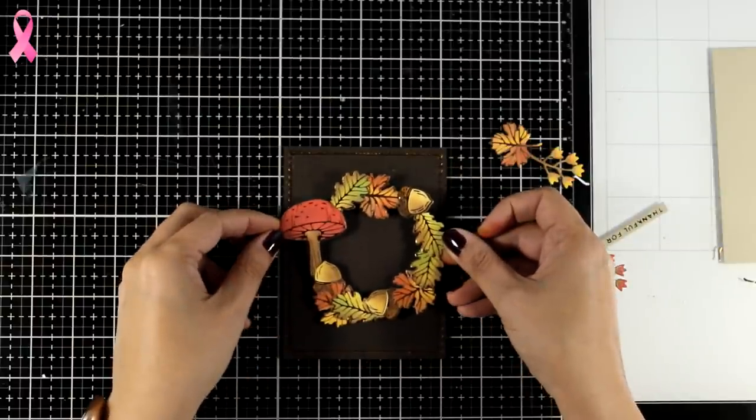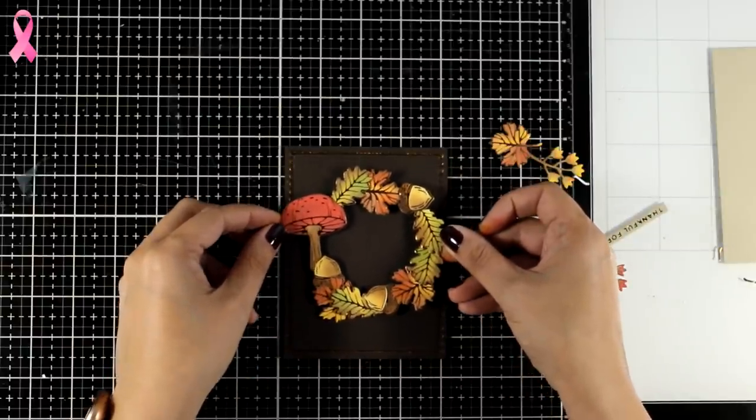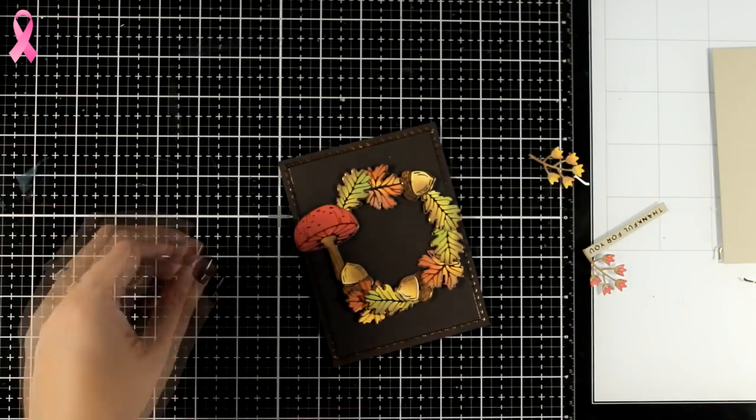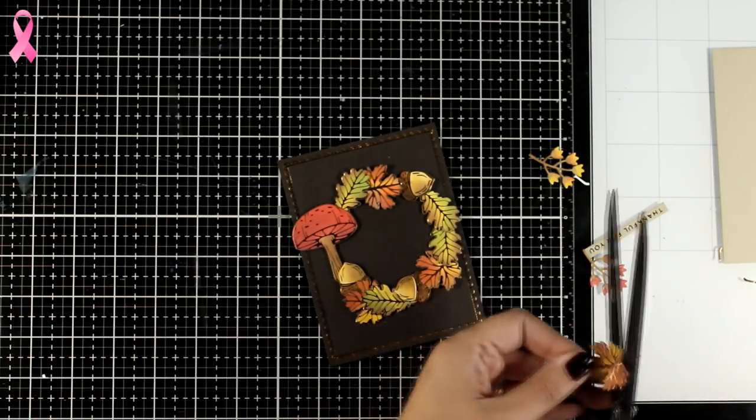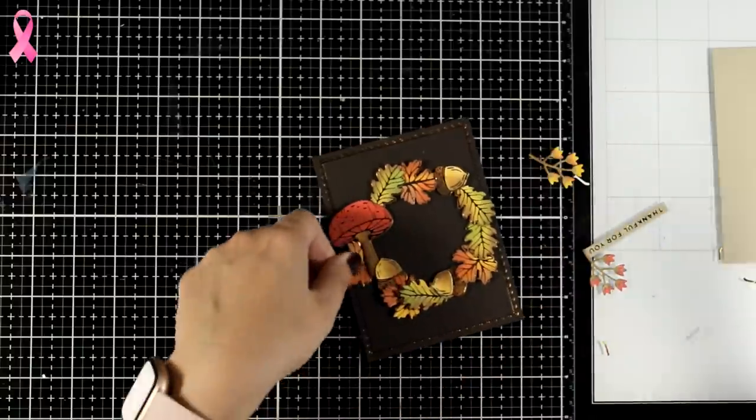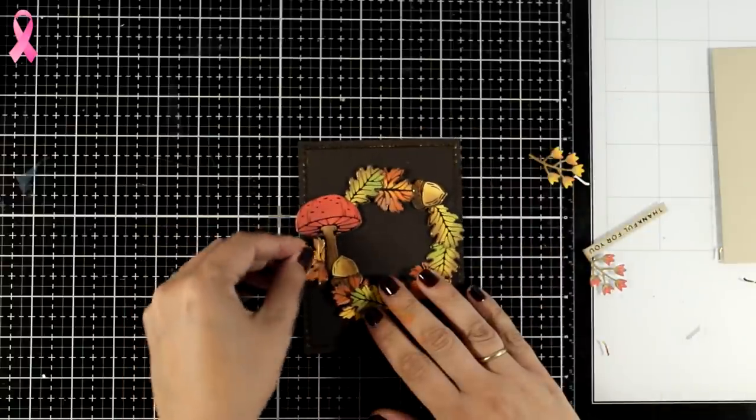I'm going to place it on top of my foiled panel. I'm also going to add a few more extra leaves to make it look rounder since I do have that kind of a flat area where that mushroom is. And I'm just chopping off a leaf so that it fits right there.